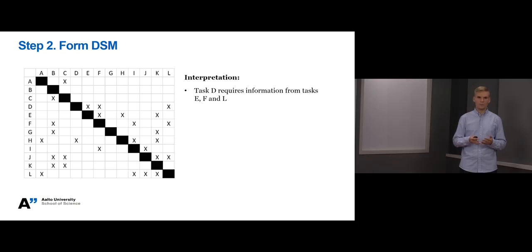For instance, row D means that task D requires information from tasks E, F and L. In turn, column B means that task B produces information to tasks C, F, J, G and K.